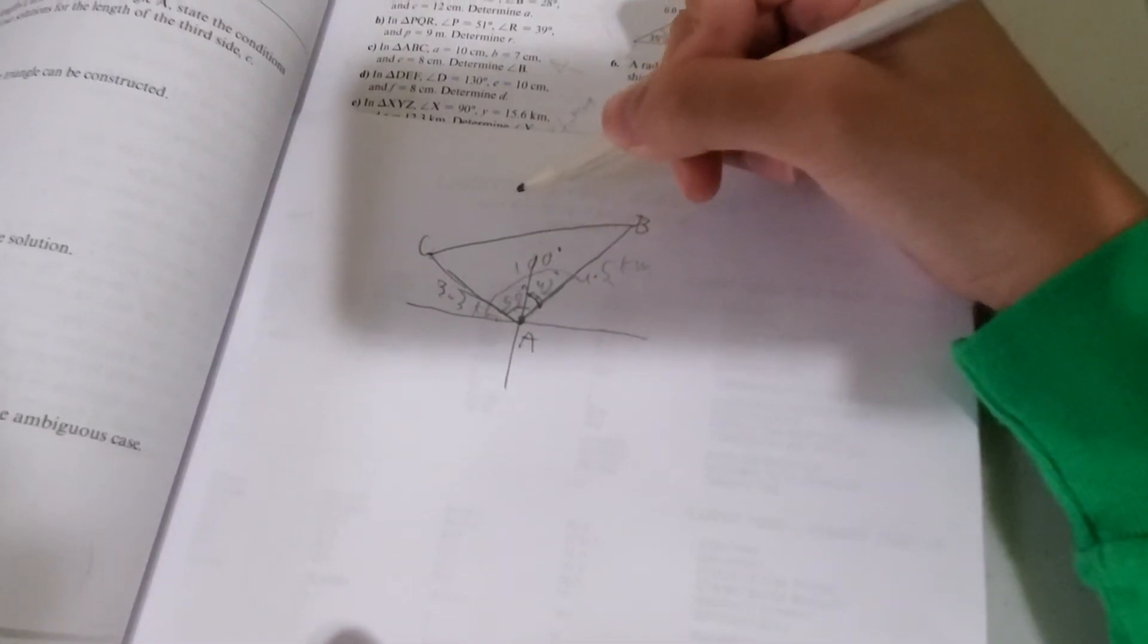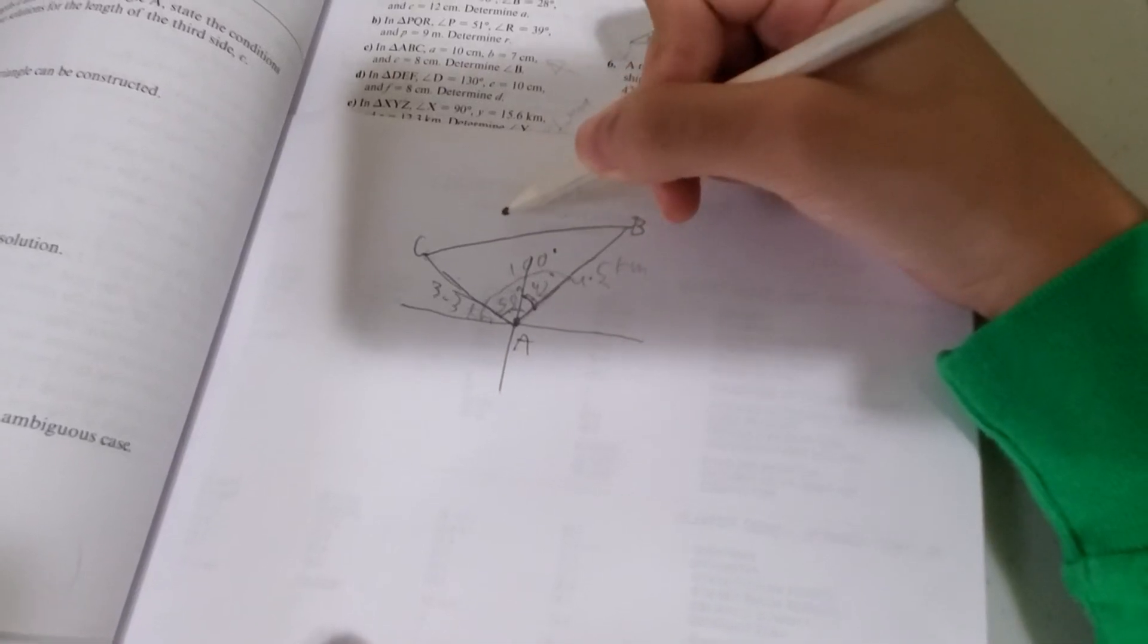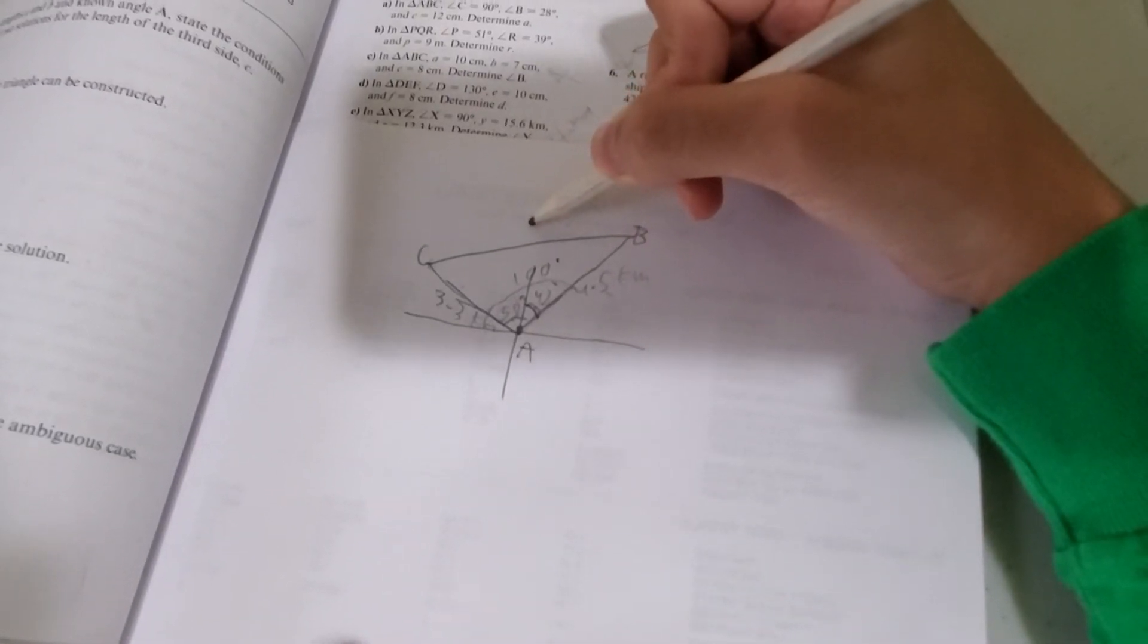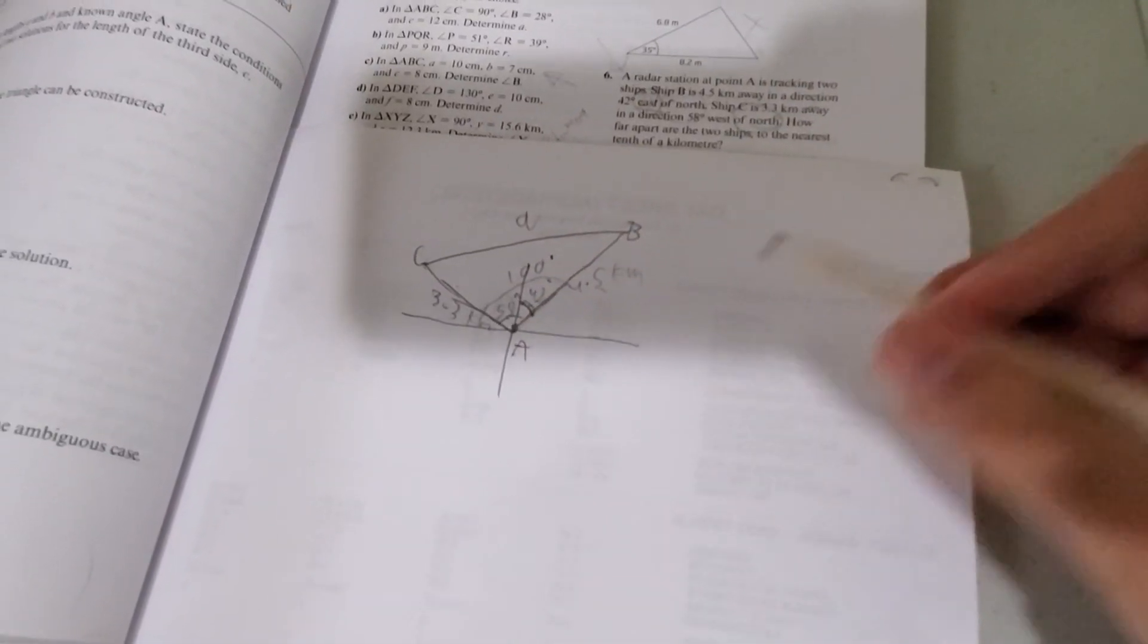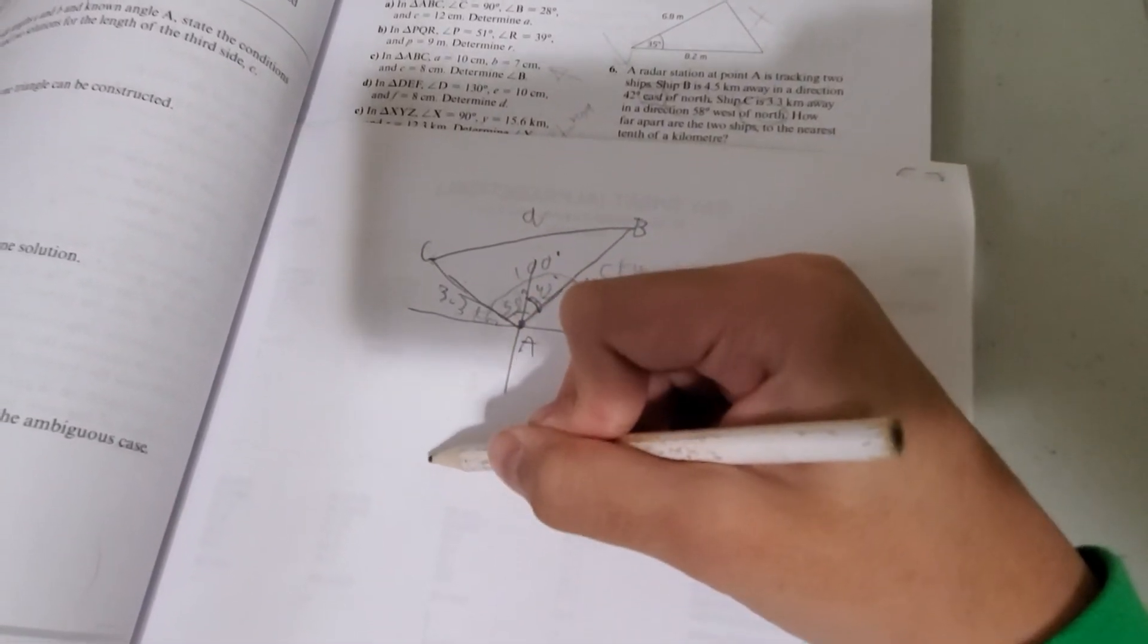Let's call this length, let's call this length, let's just call it A. Alright? Because it's opposite to the angle A.